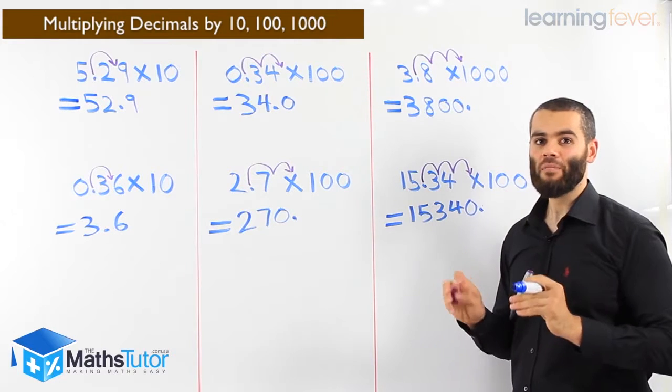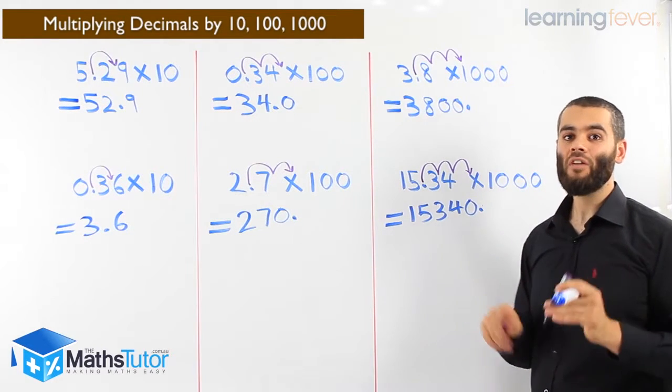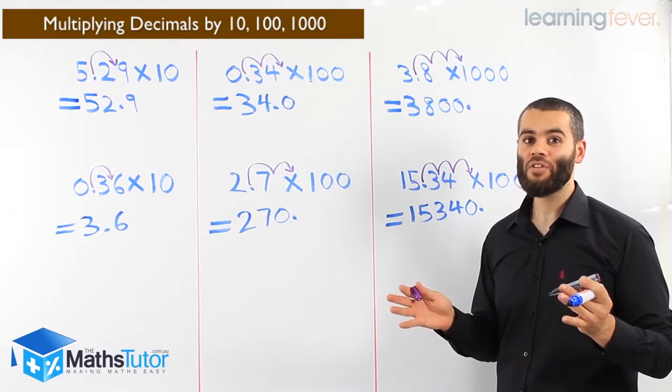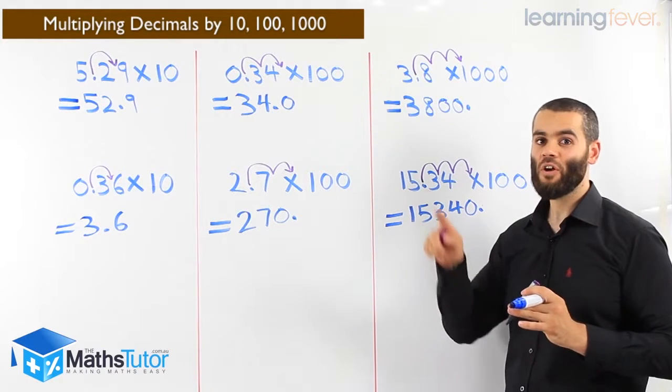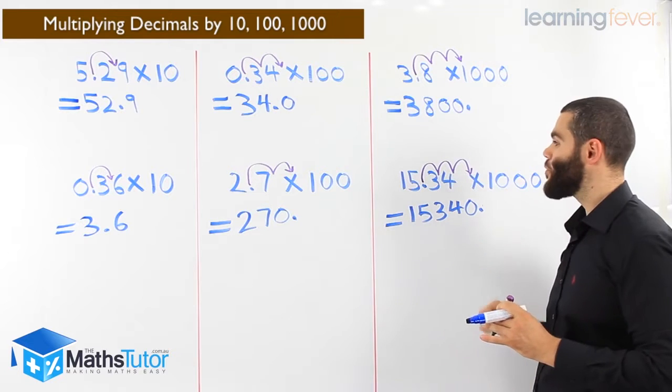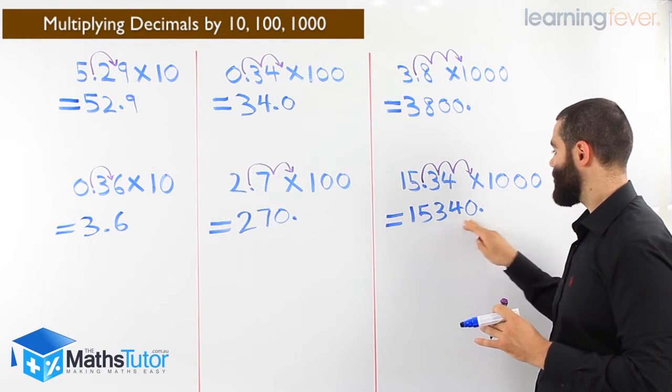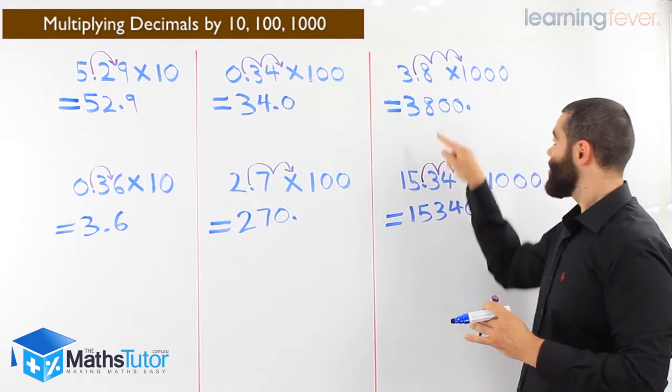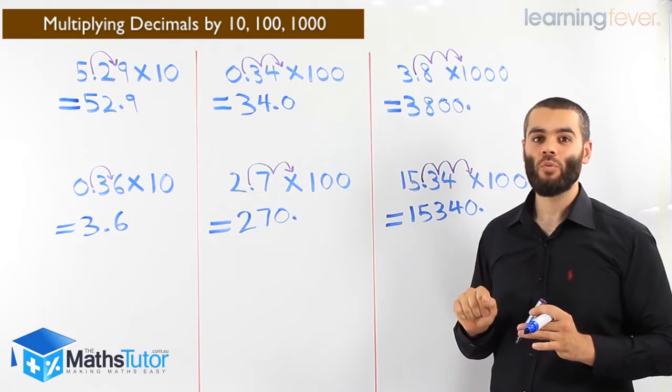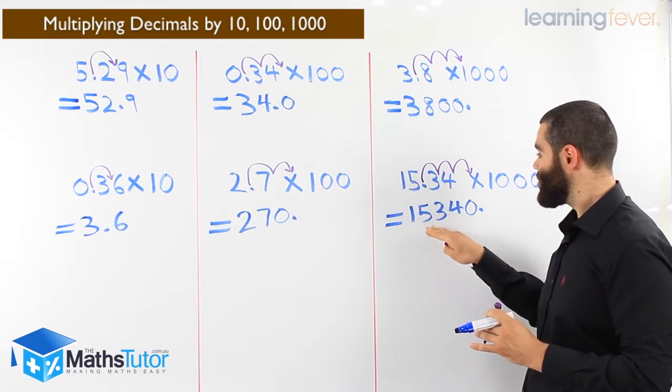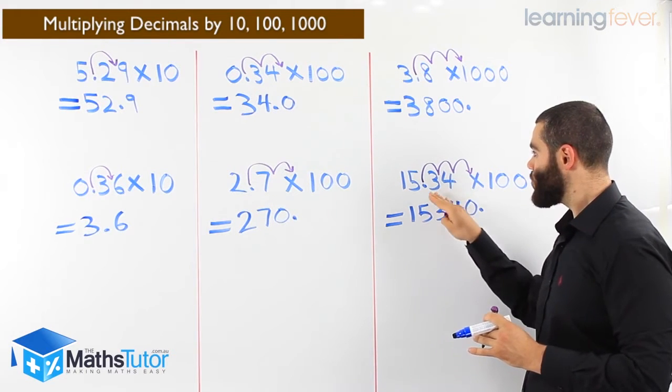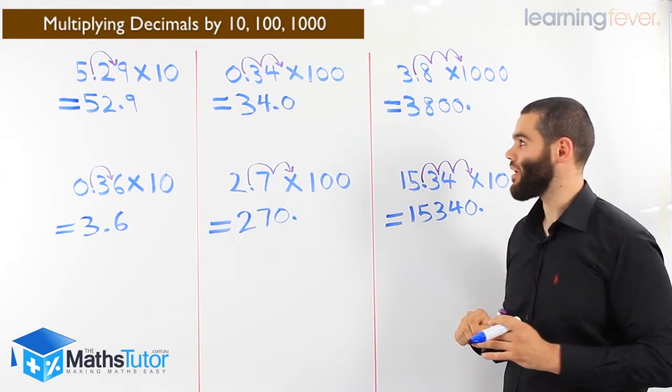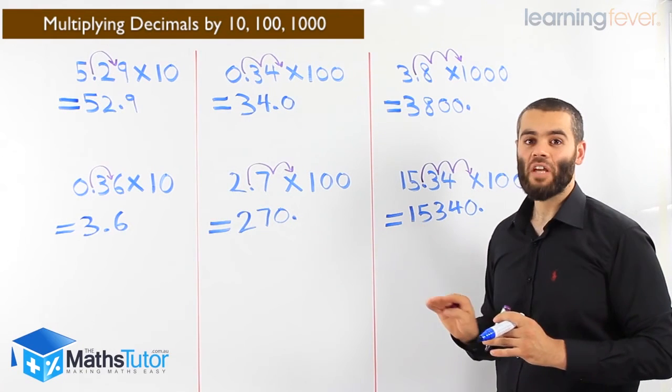Always remember, we count how many zeros are there. Whether it's a ten, we jump once. A hundred, we jump twice. A thousand, we jump three times. Ten thousand - what do you think? How many jumps? Four jumps. We're jumping over four numbers, as you can see, and we put our point to clarify: 15,340. Very easy. Always get used to the easy way. We're jumping, and it's always good to show the arrows. That way you're showing your working out, you won't make a mistake. And even if you did make a mistake, you will go back and check, and you'll fix your mistake. You'll get it correct, as always. Easy, straight to the point. Follow the steps and you'll never make a mistake.